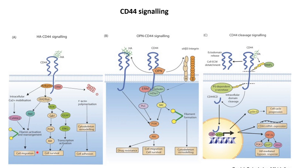This Ca2+ disruption further leads to cell migration. Simultaneously, it also triggers pathways that lead to cell survival and cell adhesion. As we know, tumor cells need to continuously and rapidly grow — it is the property of cancerous cells to rapidly grow so that they can spread across different parts of the body in a short duration of time. During this rapid growth process, CD44 triggers the cell survival pathway, down-regulating pathways that might trigger apoptosis or cell death in tumor cells.